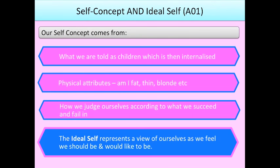Your self-concept comes from how you see yourself in terms of your appearance and roles, but Rogers also says it comes from what we are told as children, which is then internalised. Hopefully that would have been positive — things like 'you're funny, you're gorgeous, you're clever' — and so those things become what you truly believe about yourself. On the flip side, some parents might say negative things such as 'you're lazy, stupid, or fat,' and if that's the case, those things become internalised. So as an adult, you may truly believe that about yourself — that you are fat, ugly, stupid, or lazy — even if those things aren't necessarily true. Rogers also said it comes from physical attributes and from how you judge yourself according to what you succeed and fail in.